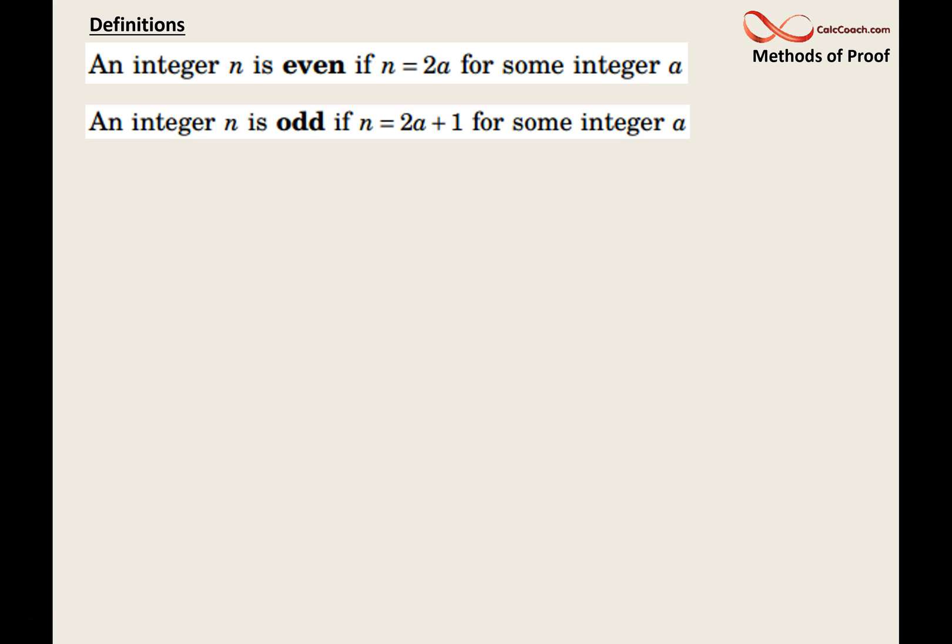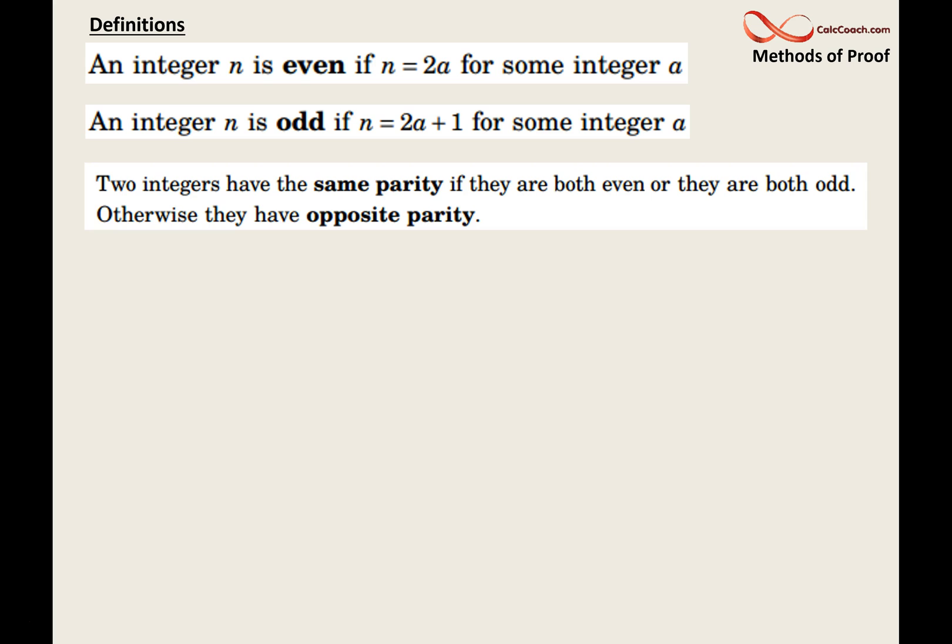An integer n is odd if n = 2a + 1 for some integer a. 7 is odd because it can be written as 2 times 3 plus 1. So if it comes up in a proof that a number is odd, we can rewrite that number as 2a plus 1 for some integer a. You don't have to use a. You can use any variable whatsoever.